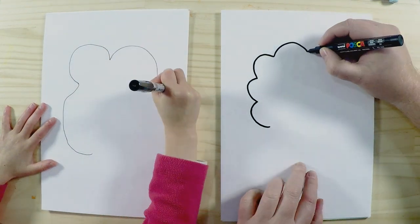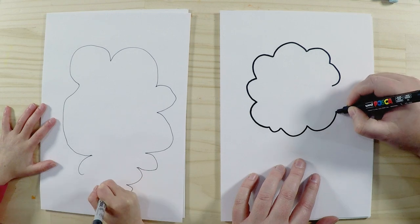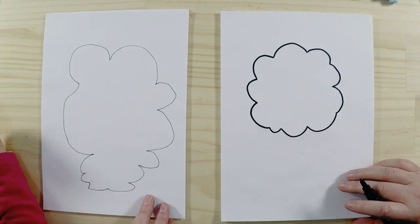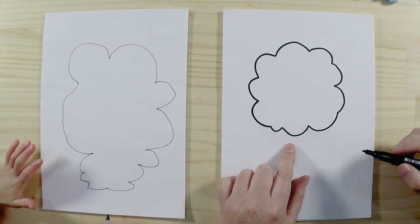I'm just going to start on this side, doing nice rounds like this. You can make them as big and as little as you want, all different shapes and sizes, nice and easy. You've made yours giant, which is absolutely huge—that is awesome!